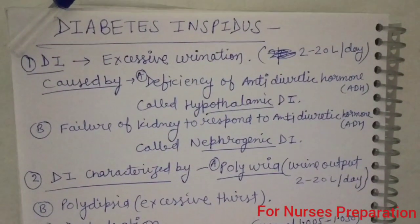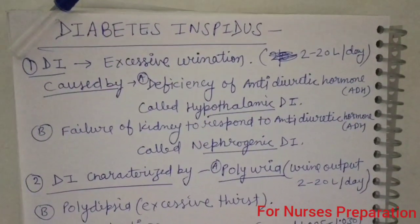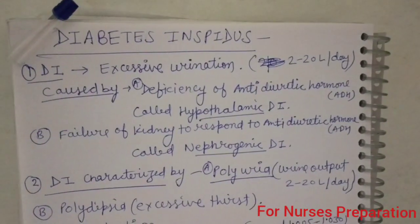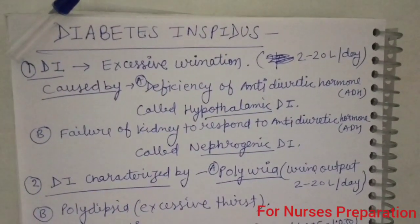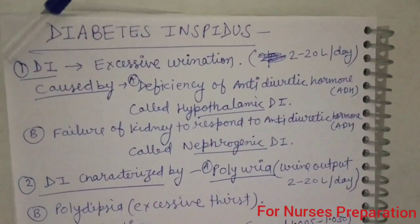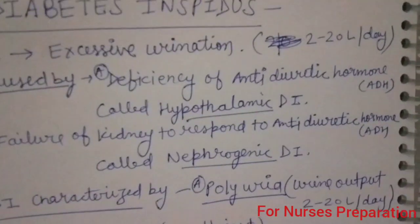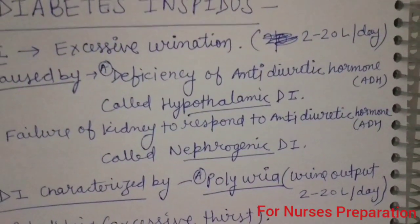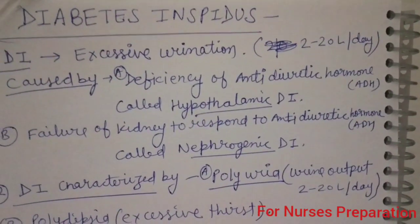Now let's talk about the causes. We can categorize this condition depending upon causes into two types. First, this disease occurs due to the deficiency of anti-diuretic hormone, ADH. ADH hormone is produced by the posterior pituitary gland and its function is to control the urine production.